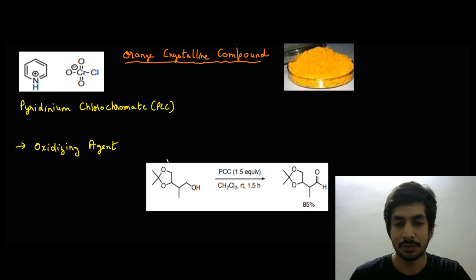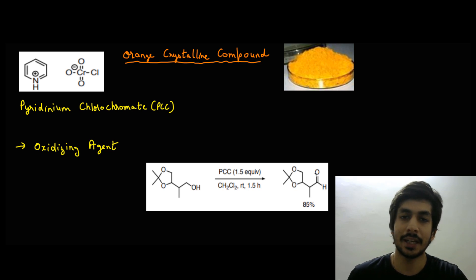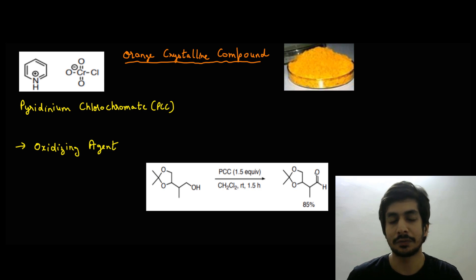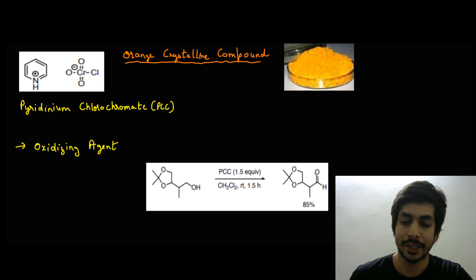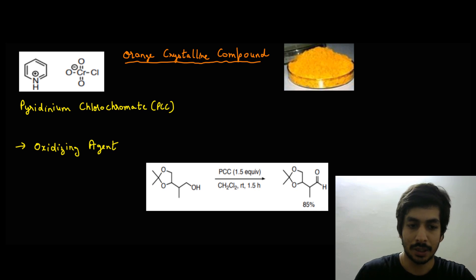For primary alcohols, in the presence of a solvent like dichloromethane, PCC transforms the alcohol into an aldehyde. For secondary alcohols, PCC transforms them into ketones. There is also one very peculiar reaction that PCC can perform, which we will now discuss.